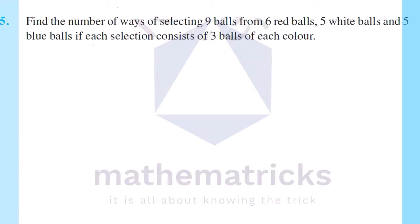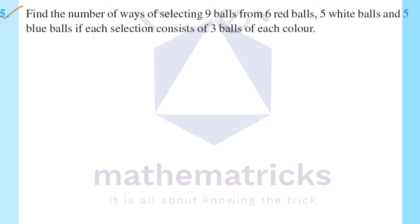Hi everyone, welcome to Mathematrix online learning. Exercise 7.4, 5th question. Find the number of ways of selecting 9 balls from 6 red balls, 5 white balls, and 5 blue balls, if each selection consists of 3 balls of each color.